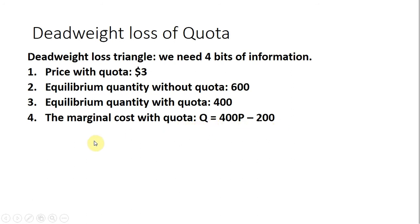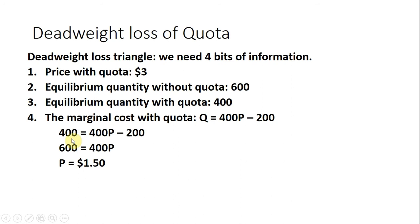So here's the supply equation. I'll plug 400, the quota, in for Q and then solve for P, and we see that P equals $1.50.